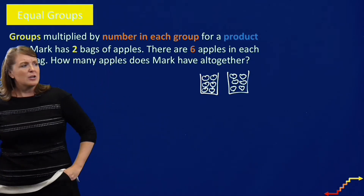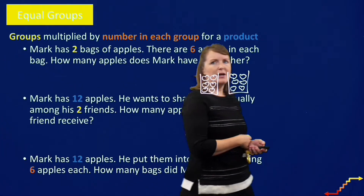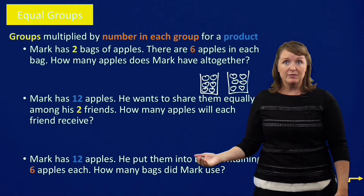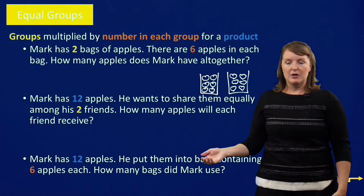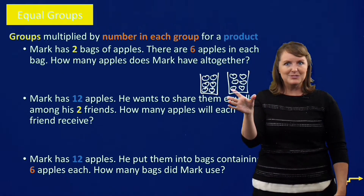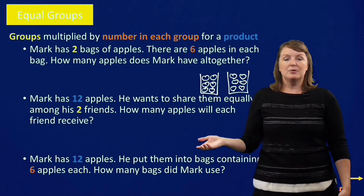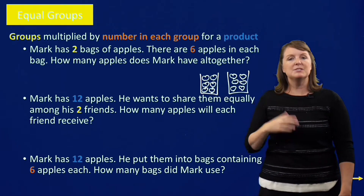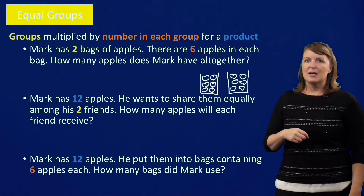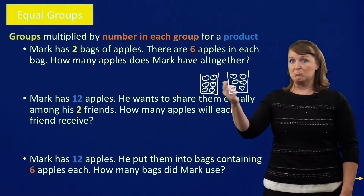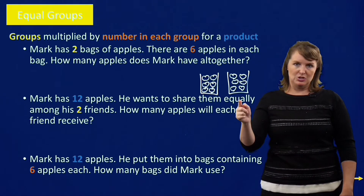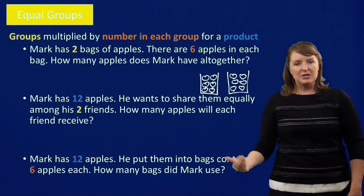We have other equal groups stories. Look at this one: Mark has 12 apples and he wants to share them equally among two friends. How many apples will each friend receive? Each friend is going to receive six apples. Here's another: Mark has 12 apples and puts them into bags containing six apples each. How many bags did Mark use? Mark used two bags. So all of these are equal groups stories.